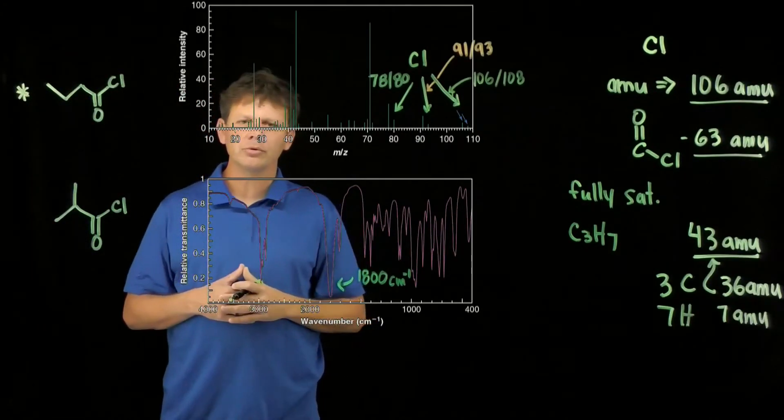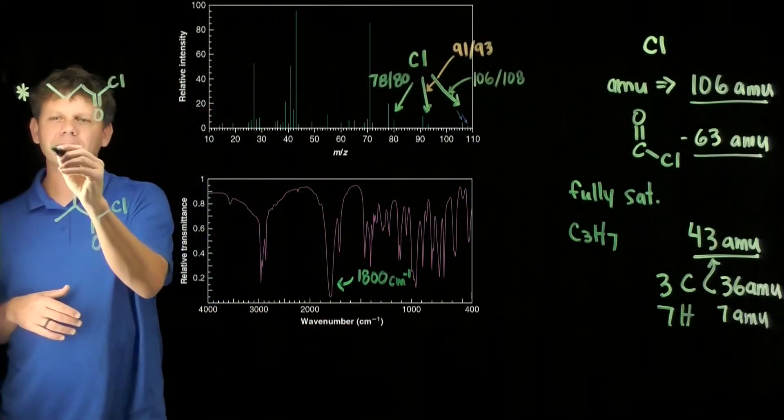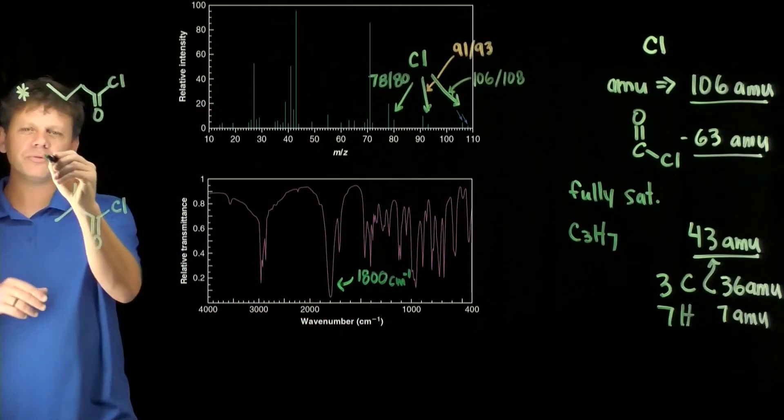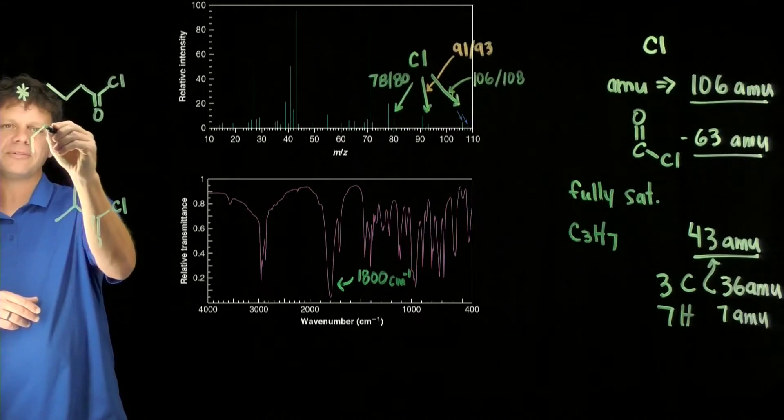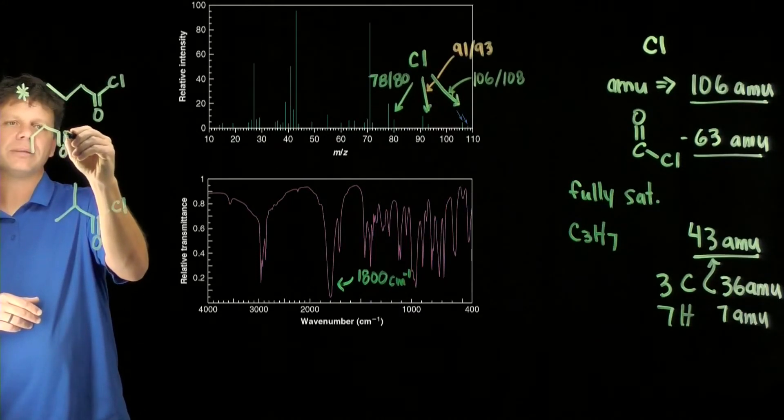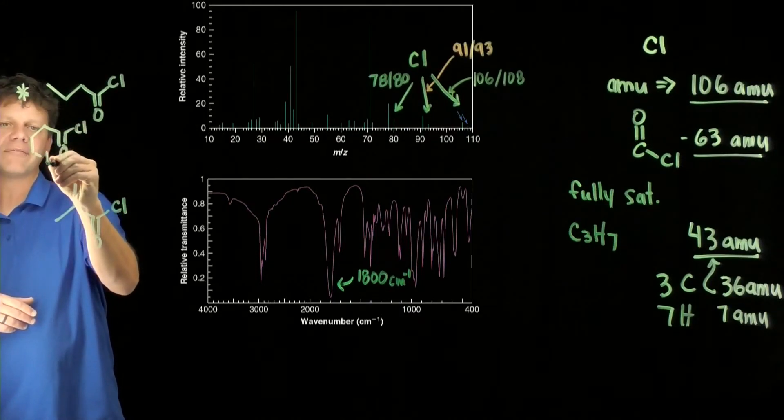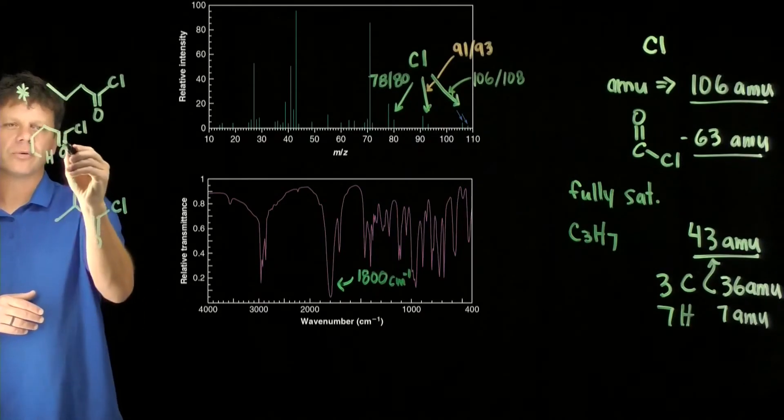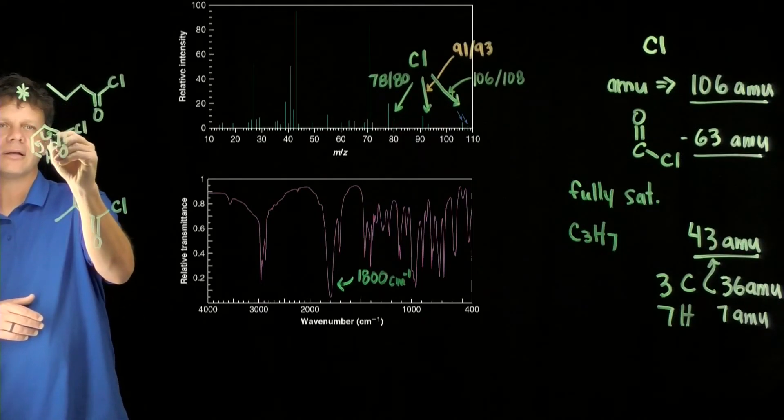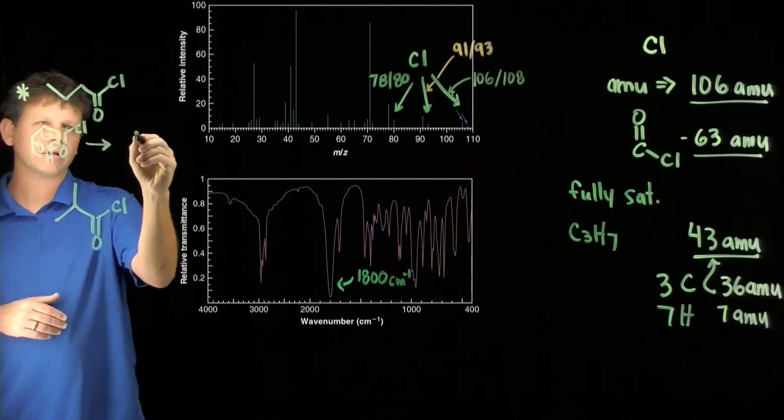Now because we might be curious how is it going to lose its ethyl group, well that can happen in the McLafferty rearrangement. Sketching it here, this goes there, that goes there, that goes here to make this molecule.